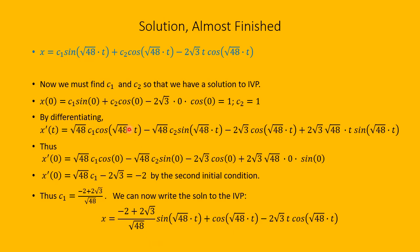The general solution to the non-homogeneous problem is the complementary solution plus the particular solution. The complementary solution is the solution to the corresponding homogeneous problem, and the particular solution was c4 t cos(√48 t), with c4 = -2√3.